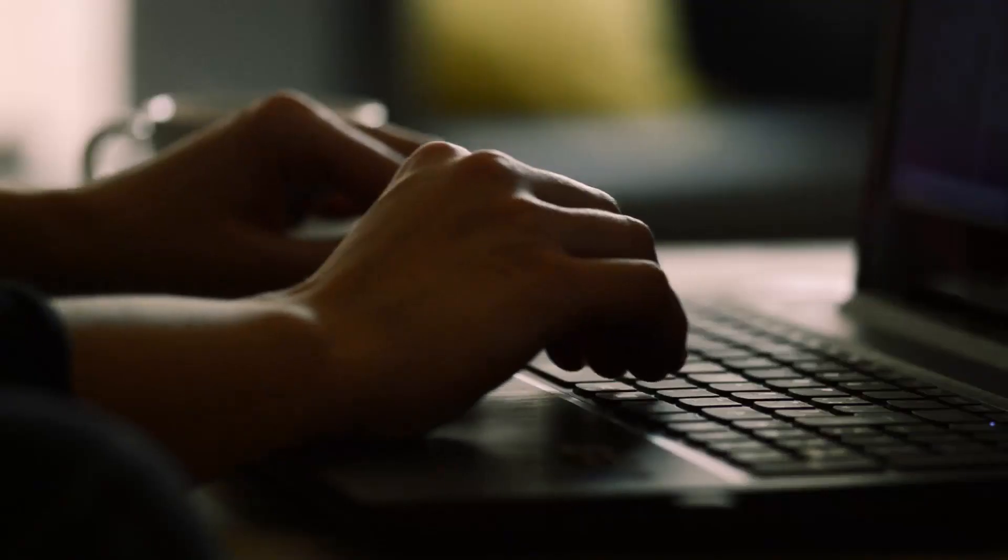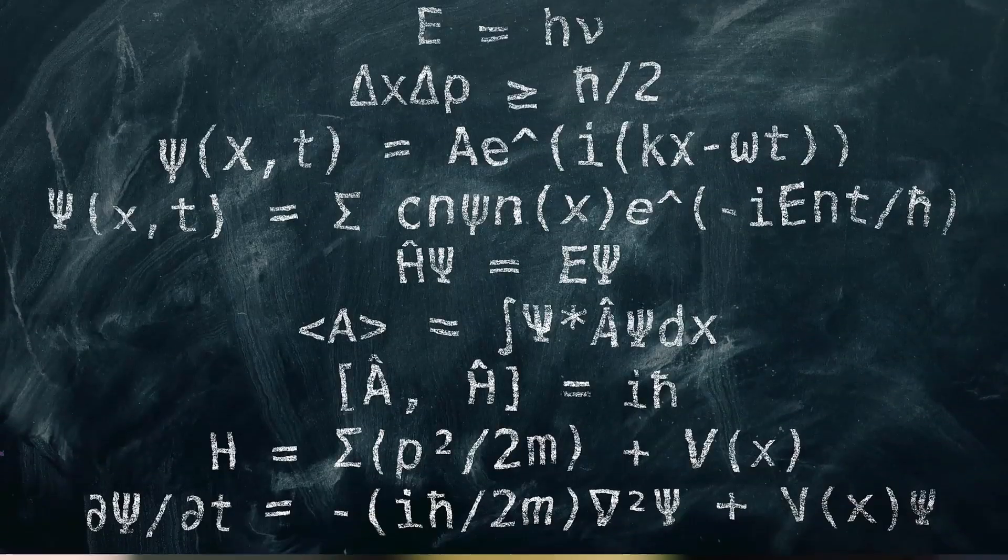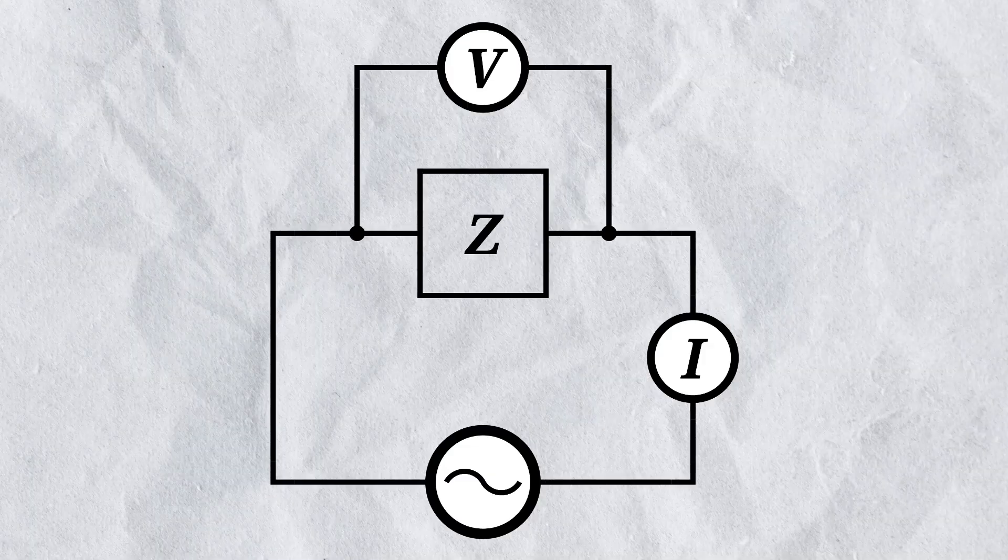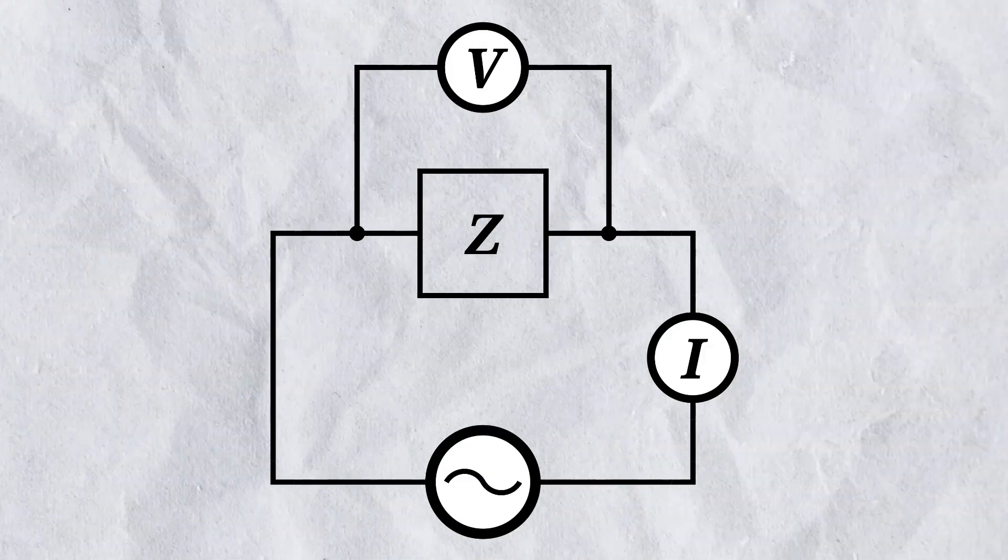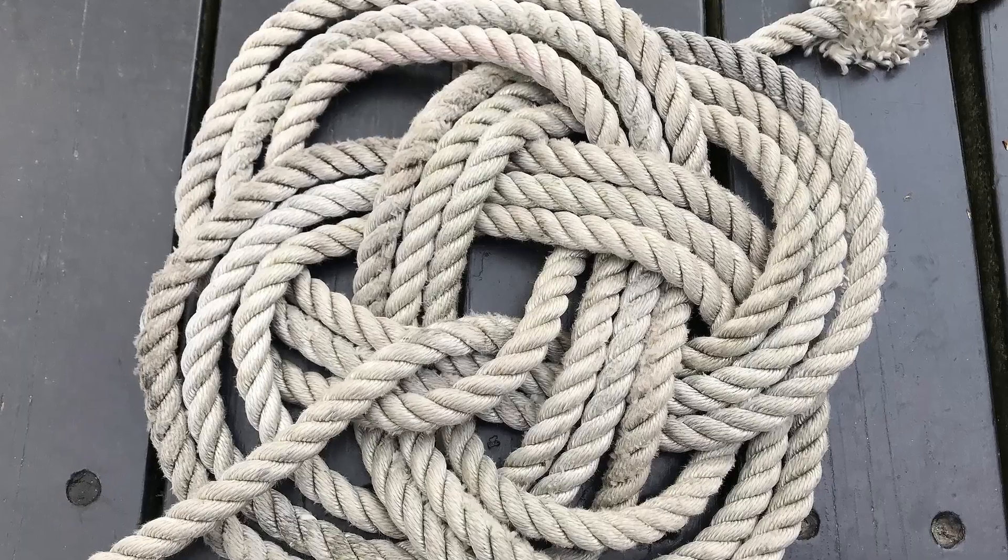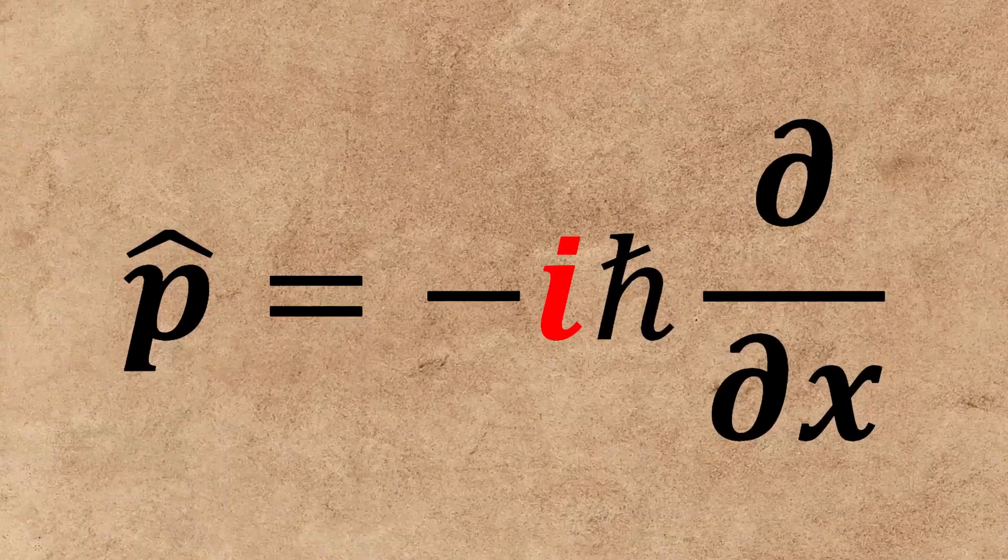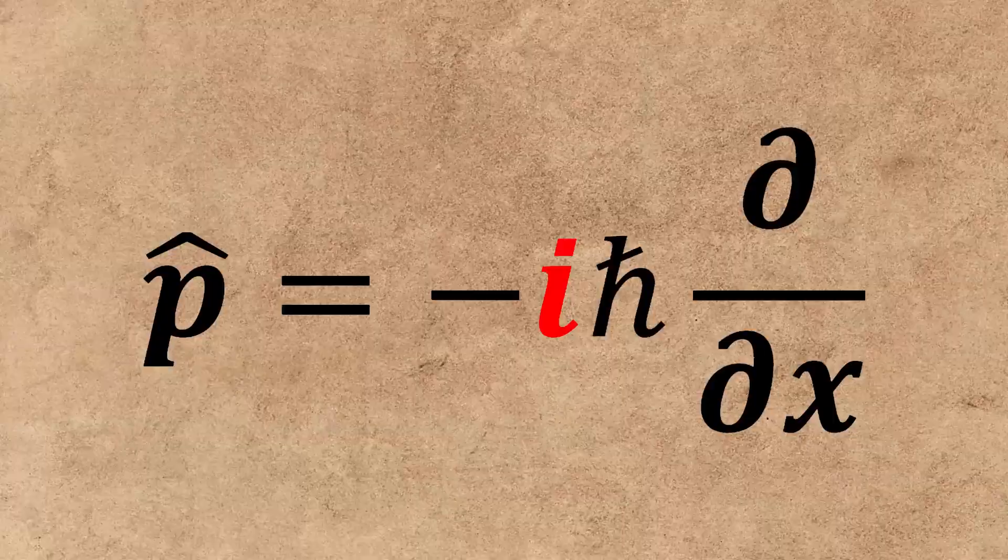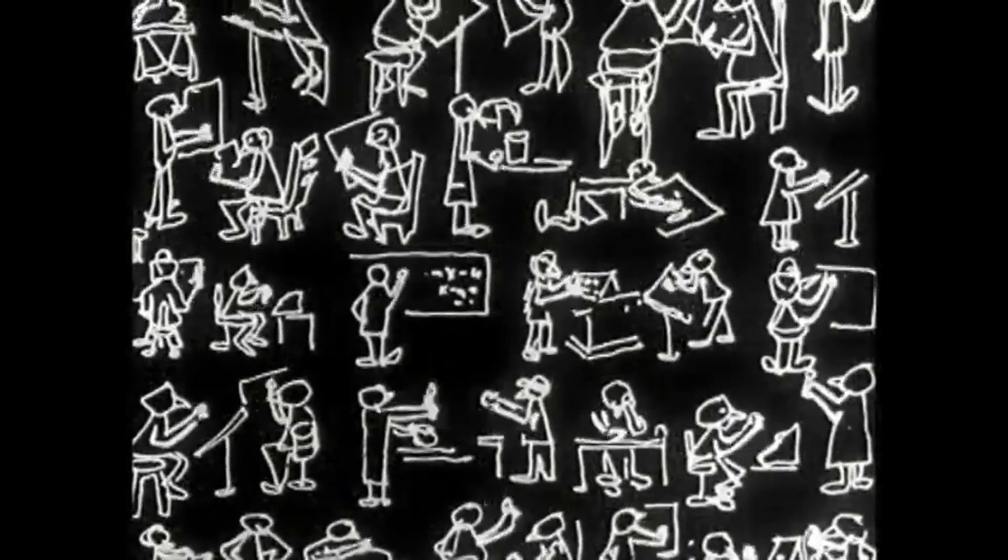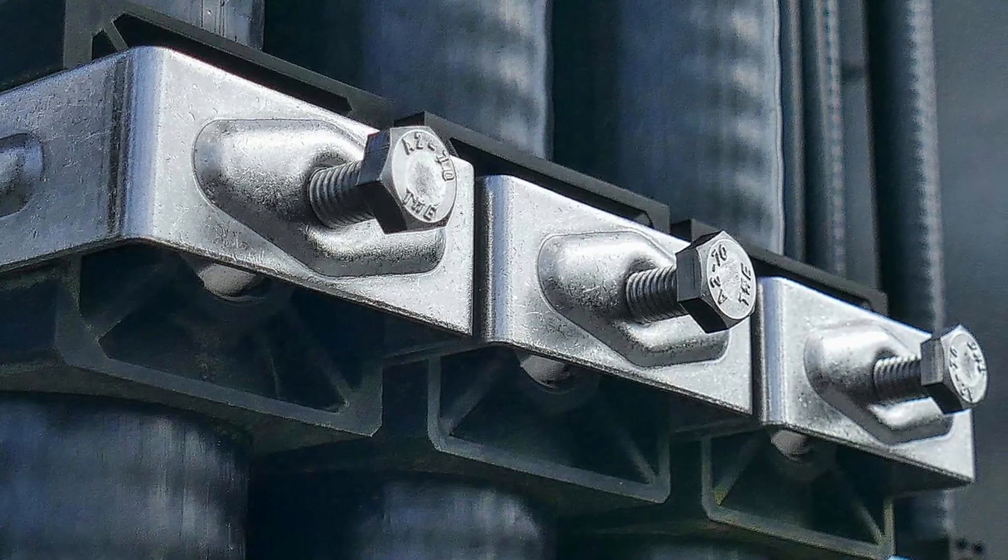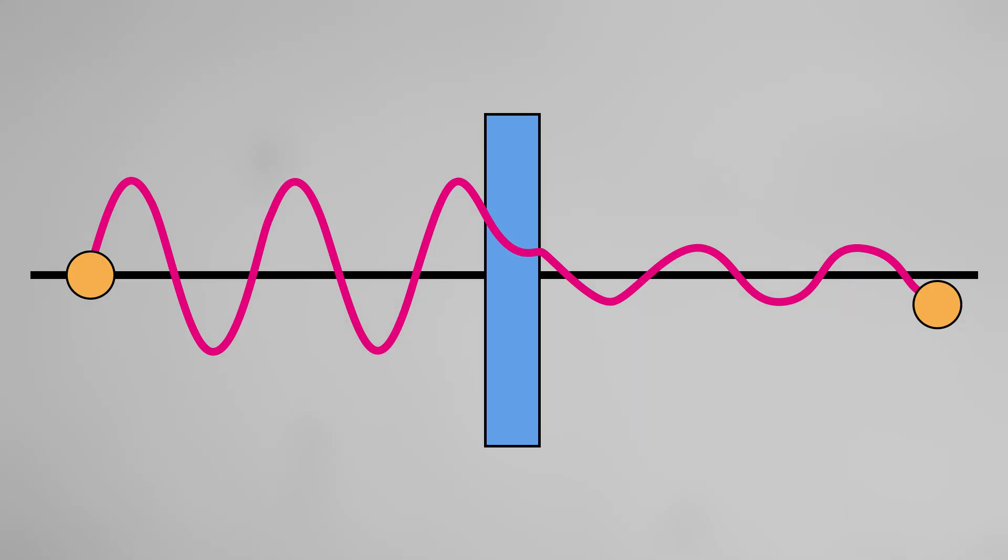If you look up quantum mechanics, you will sooner or later encounter the imaginary number i. Other fields like electrical impedance also have it, but unlike those, there are equations in quantum theory with complex numbers that cannot be replaced with real numbers. This means complex numbers in quantum mechanics aren't just there to make calculations easier, but they are there because they are necessary for the theory itself to be consistent.